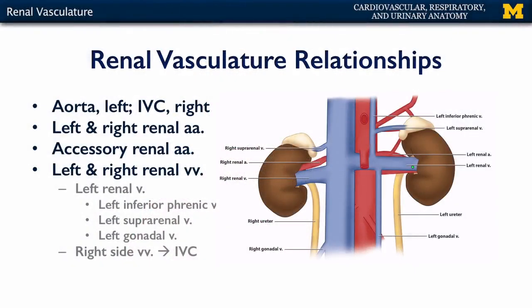The venous side of the renal vasculature is quite unique — we have an asymmetry with regards to the distribution of vessels. Because the inferior vena cava is so far to the right, we have a very long left renal vein. Into that left renal vein, we have a couple of tributaries: coming down from the diaphragm is the inferior phrenic vein, from the suprarenal gland is the suprarenal vein, and coming up from the testis or ovaries would be the gonadal vein. On the right side, these would typically just flow directly into the inferior vena cava — the right phrenic vein, right suprarenal vein, and right gonadal vein all flow into the IVC. We'll see in a bit how this may cause problems in certain individuals.